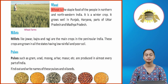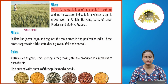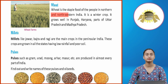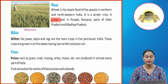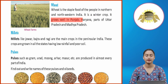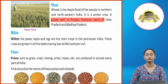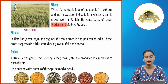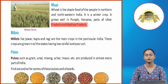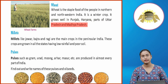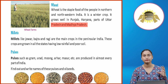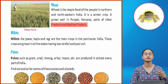Wheat is the staple food of the people in Northern and North-Western India. It is a winter crop. It grows well in Punjab, Haryana, Uttar Pradesh, and Madhya Pradesh.